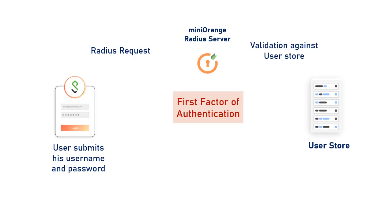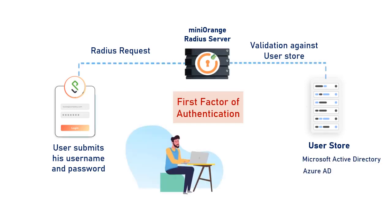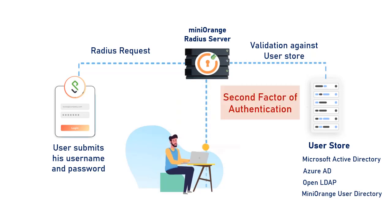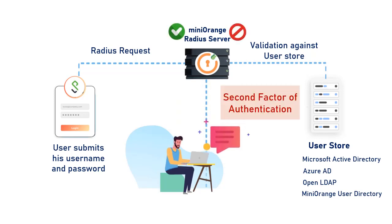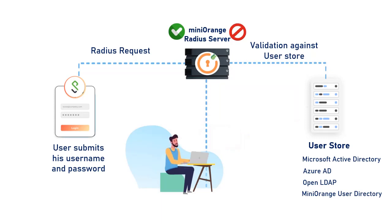The user can be validated against any user directory like Microsoft Active Directory, Azure AD, OpenLDAP, or you can keep users in the Mini Orange user directory as well. After the first level of authentication, Mini Orange prompts the user with two-factor authentication and grants or revokes access based on the 2FA input by the user.